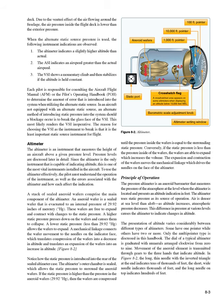Figure 8-2: notice how the static pressure is introduced into the rear of the sealed altimeter case. The altimeter's outer chamber is sealed, which allows the static pressure to surround the aneroid wafers. If the static pressure is higher than 29.92 Hg, the wafers are compressed until the pressure inside equals the surrounding static pressure. Conversely, if the static pressure is less than the pressure inside the wafers, the wafers expand, increasing the volume. The expansion and contraction of the wafers moves the mechanical linkage which drives the needles on the face of the altimeter.